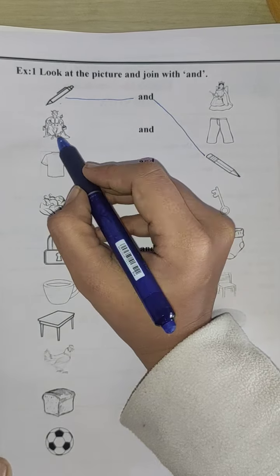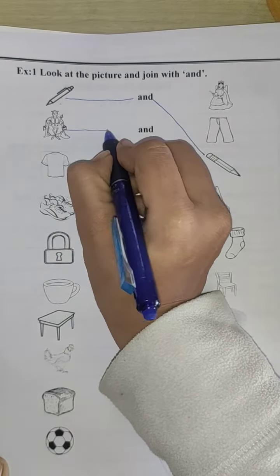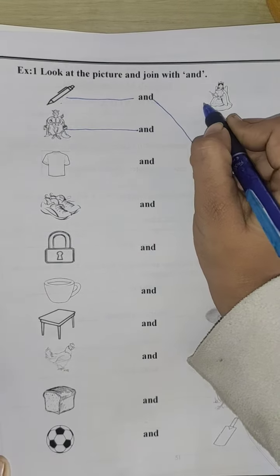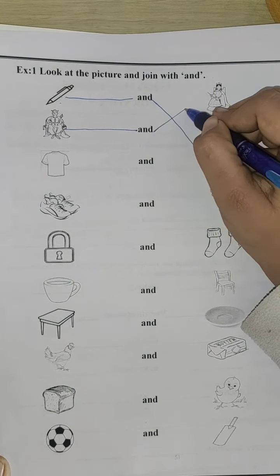Number two, second picture is of king. King and, what is the pair of king? Queen. Yes, king and queen. So, match and with queen.